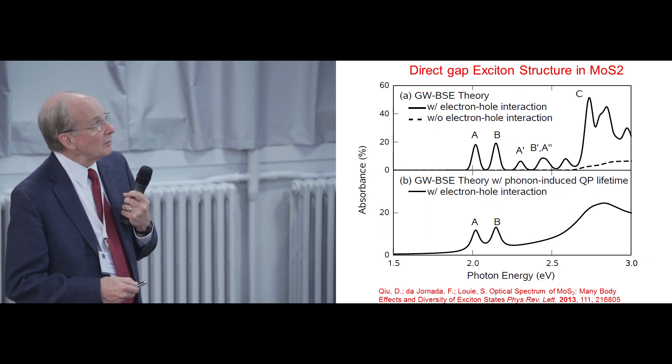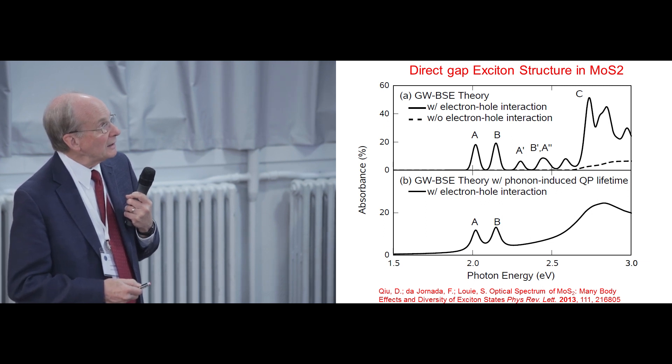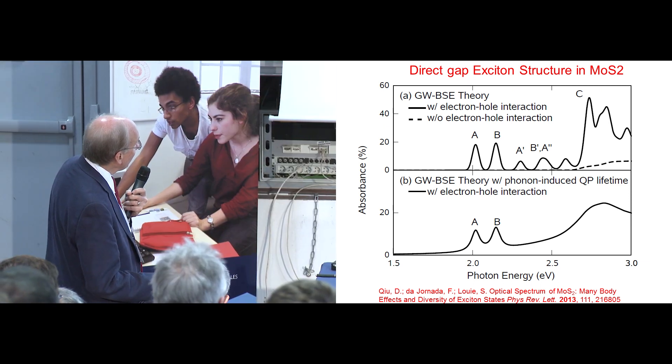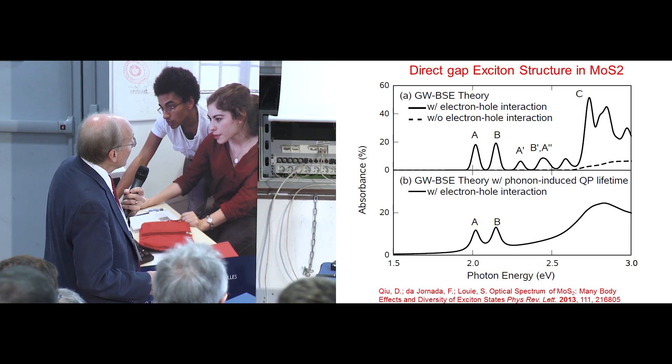and there's maybe six or eight tenths of a volt binding between the lowest excitonic peak and the beginning of the continuous absorption. This is actually the spectrum that's observed experimentally in the lower trace here.